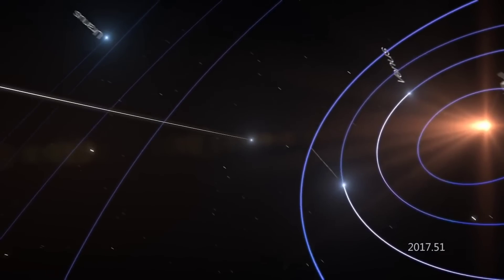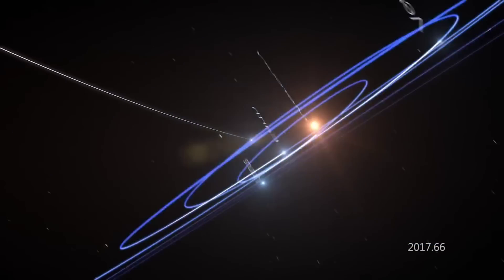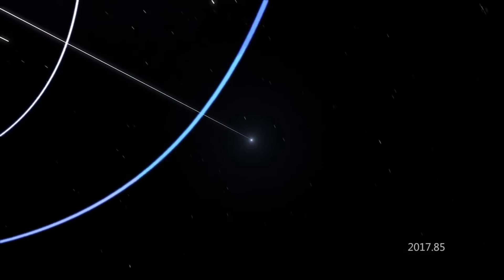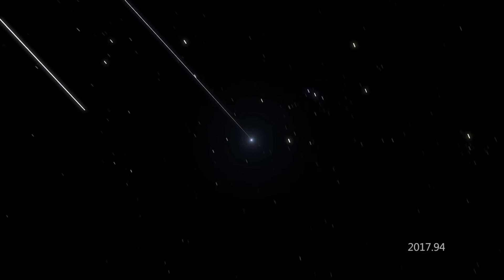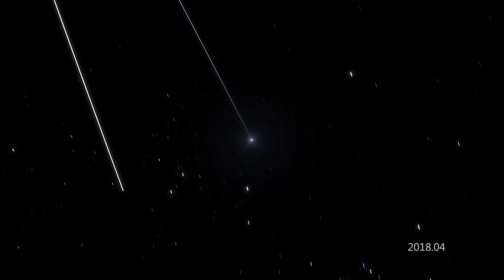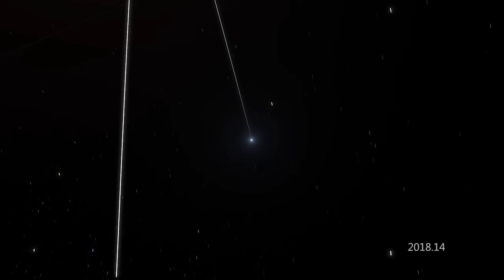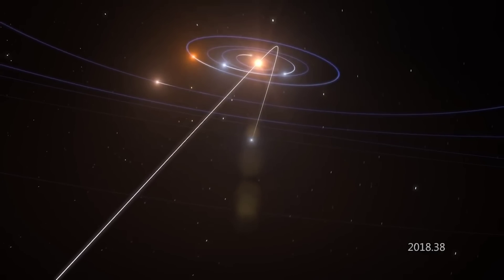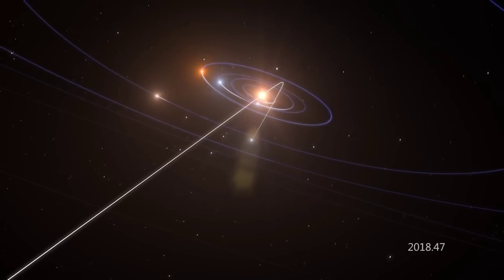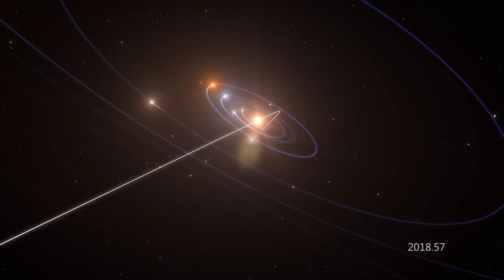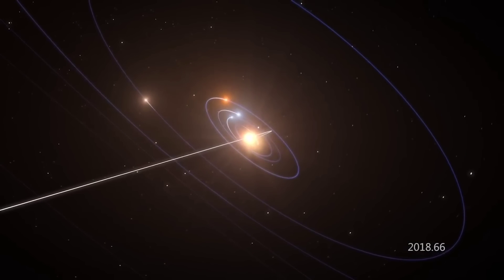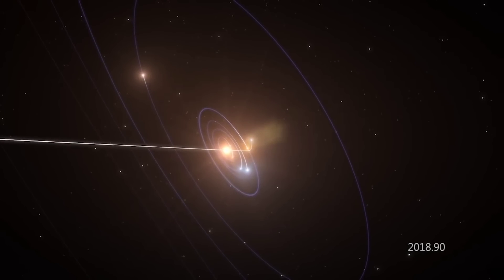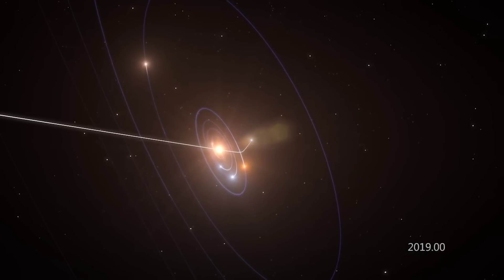As you may be aware, Dr. Amir Siraj and Dr. Abraham Loeb of the Department of Astronomy at Harvard University authored a paper titled Discovery of a Meteor of Interstellar Origin. The paper reported the meteor as originating from an unbound hyperbolic orbit defined as interstellar space with a 99.999% confidence. This event would predate the discovery of Oumuamua by about three years.